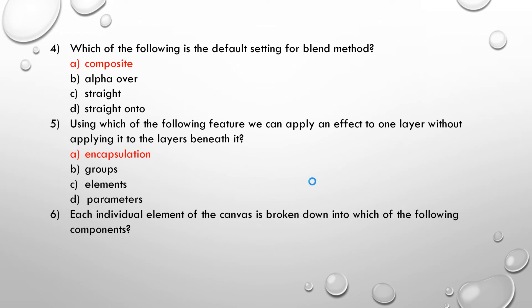Question number 6. Each individual element of the canvas is broken down into which of the following components? A. Frames. B. Layers. C. Keyframe. D. Panels. Correct answer is layers.